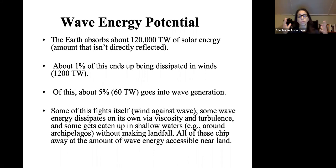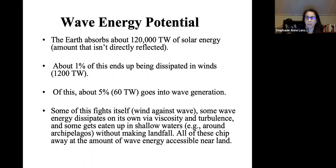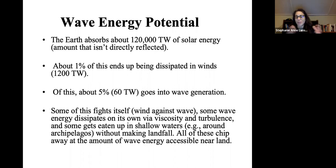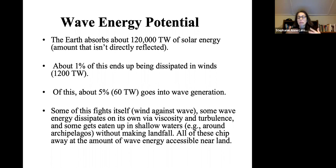The Earth absorbs about 120,000 terawatts of solar energy — the amount not reflected back. About 1% of this, roughly 1,200 terawatts, is dissipated in the wind, and about 5% of that goes into wave energy production, yielding about 60 terawatts. The wave energy council estimates about 2 terawatts of that 60 could be captured if economically feasible, because some waves dissipate against each other, some dissipate naturally, and some are absorbed in shallow waters — all chipping away at what's accessible near land and offshore.